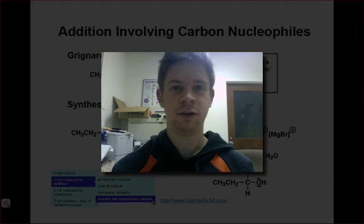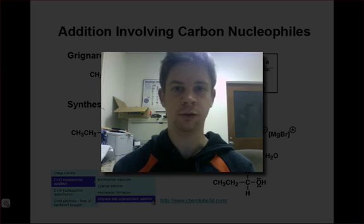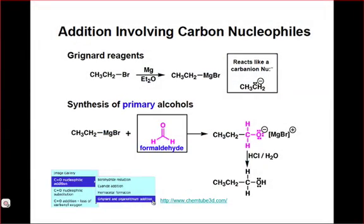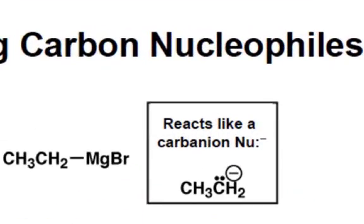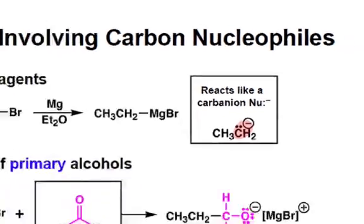In this webcast, we're going to take a look at four common examples of nucleophiles that can add into the carbonyl group to form alcohols. The first example, shown here, is that of the Grignard reagent. Recall that Grignard reagents feature a carbon-magnesium single bond, and that this covalent bond is highly polarized, so that we can treat Grignard reagents essentially as carbanions.